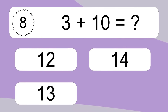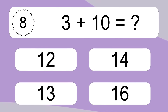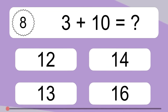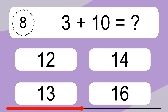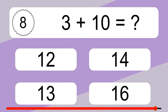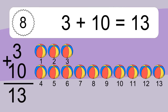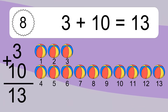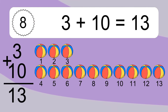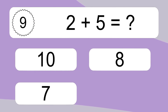3 plus 10 equals what? Let's count it. 1, 2, 3, 4, 5, 6, 7, 8, 9, 10, 11, 12, 13. 3 plus 10 equals 13.